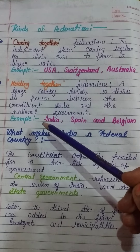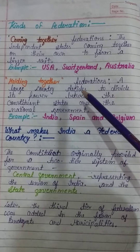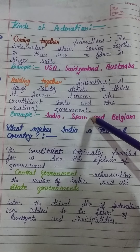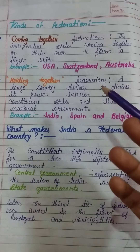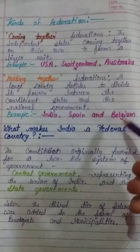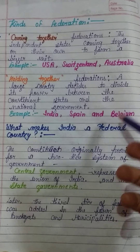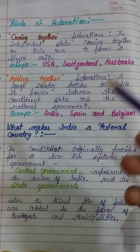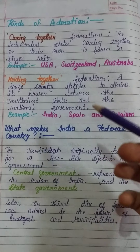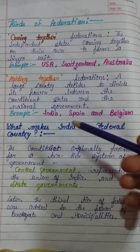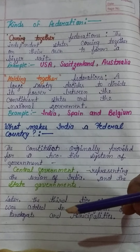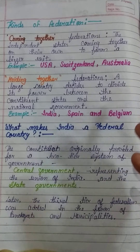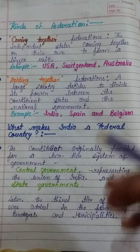Next is Holding Together Federation. Here, a large country decides to divide its power between the constitutional states and the central government. Where there was a large population and diversity across regions, they shared their power. The best example is India. Then Belgium, which we read about in the first chapter, and Spain. They all shared their power between the central and state governments.